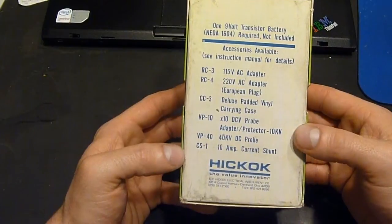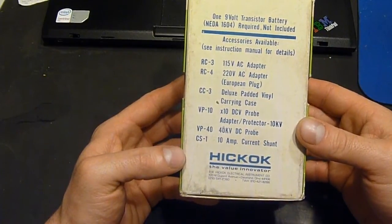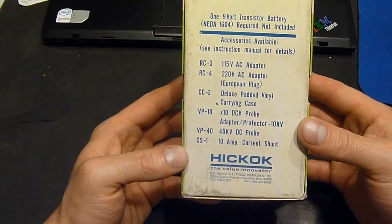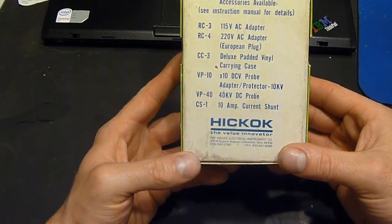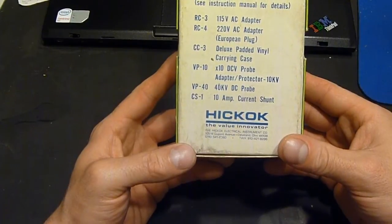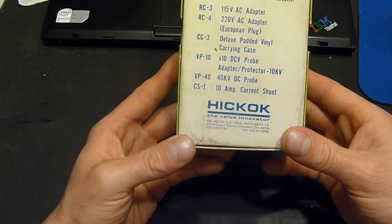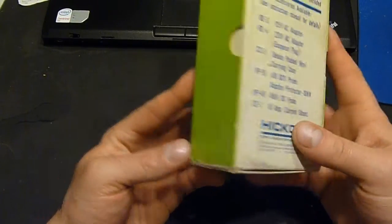Accessories available. It has a 115 volt AC adapter, deluxe padded vinyl carrying case, times 10 DC probe, 40 kilovolt DC probe, and a 10 amp current shunt. Alright, so let's open this thing up.